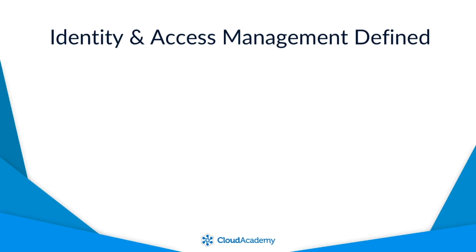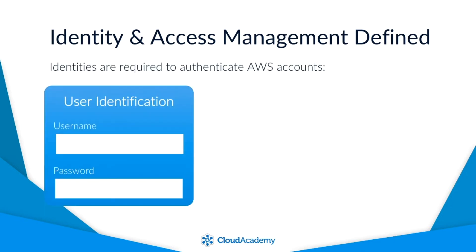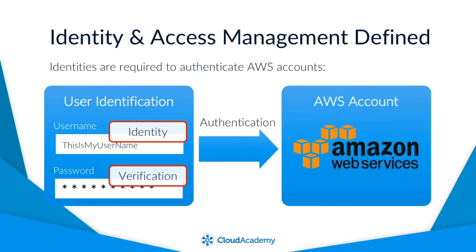I shall break this down into two parts, starting with identity management. Identities such as AWS usernames are required to authenticate to your AWS account. Authentication is the process of presenting an identity — in this case a username — and providing verification of the identity, such as entering the correct password associated.